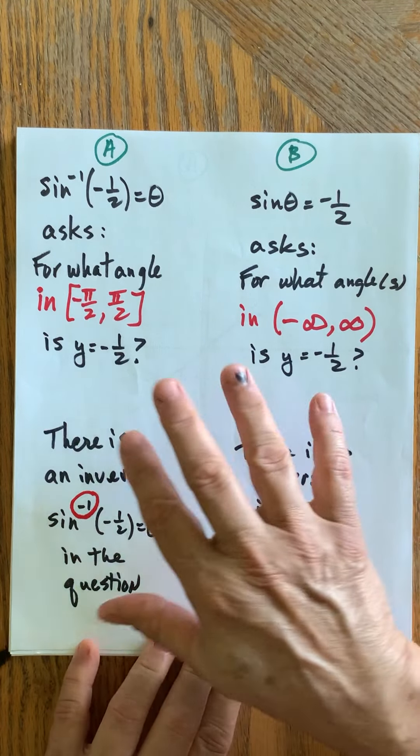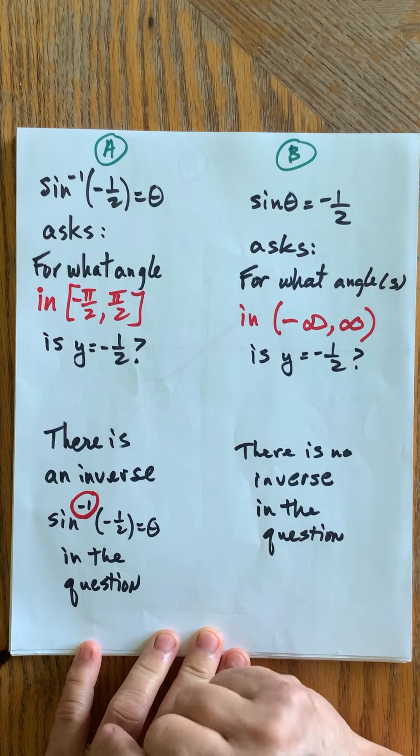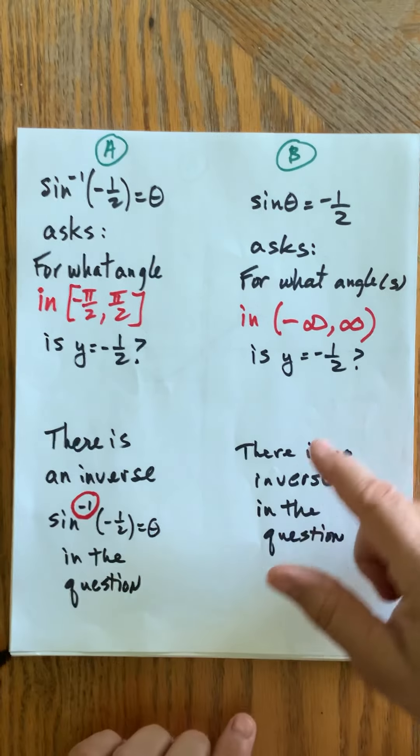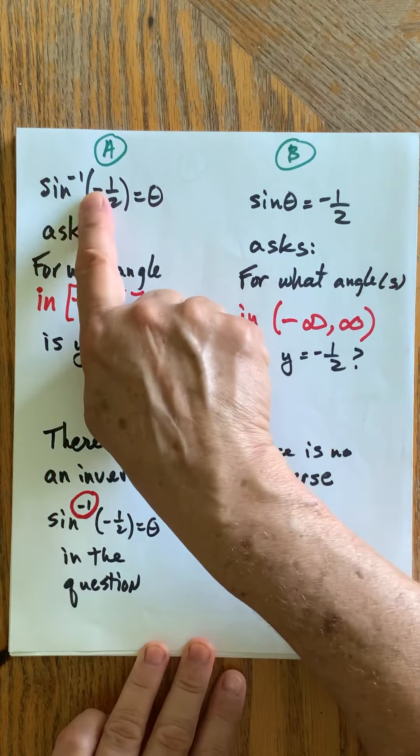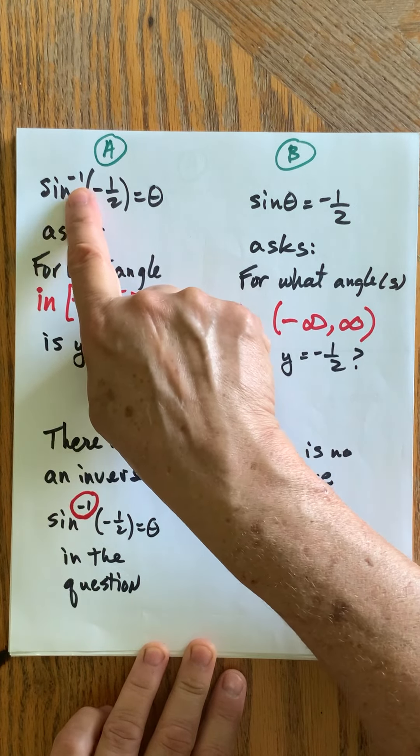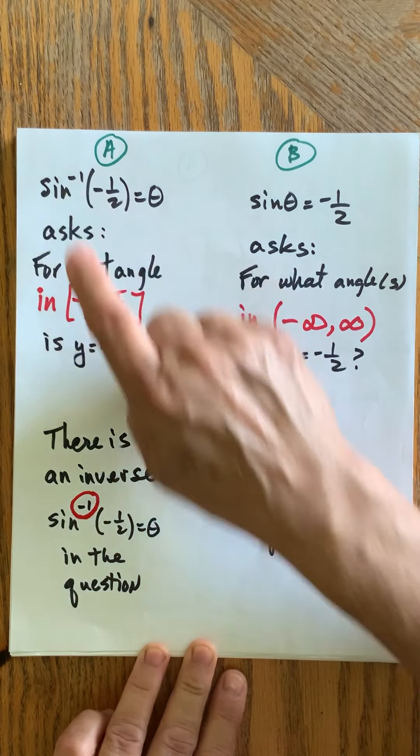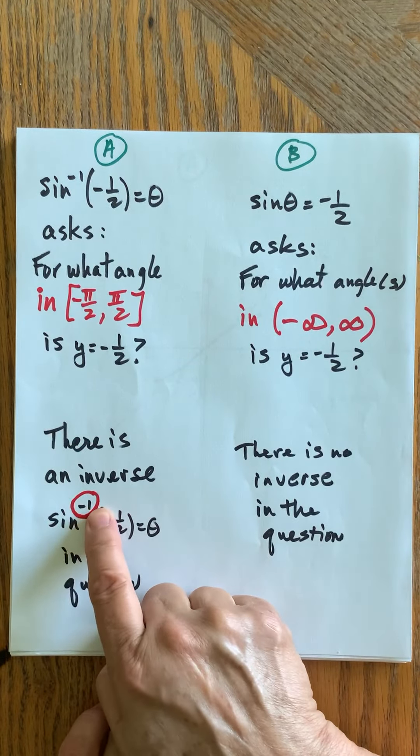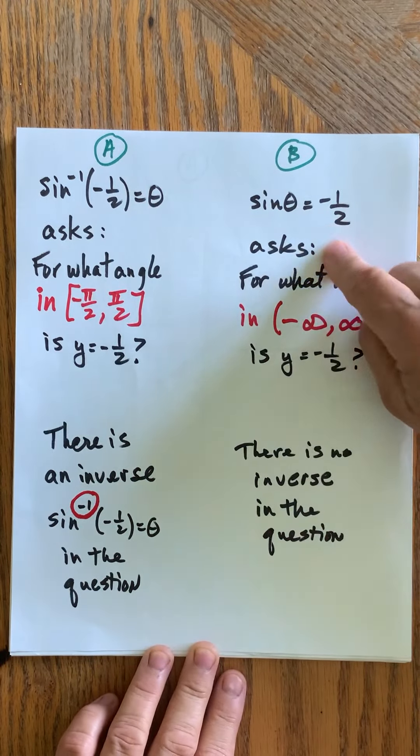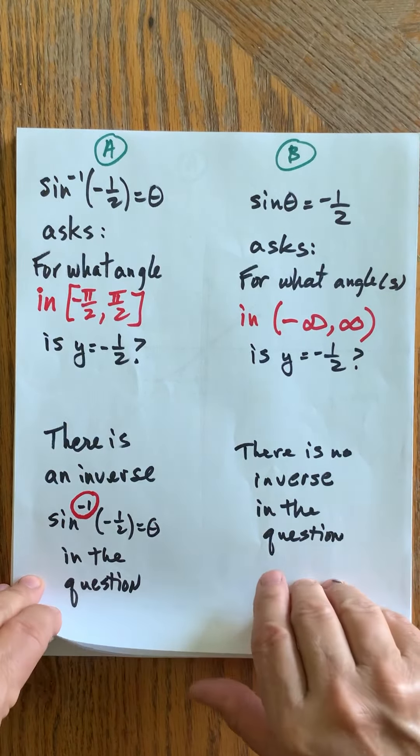I'm going to go into why they're so different, but I just want to quickly answer how do I tell the difference. Well here there's an inverse in the first question, it actually has an inverse symbol that has a trig equation and then the inverse, so there's that little negative one sign. And here we have an equation, there's no inverse in the question. So that's how you can really tell them apart.